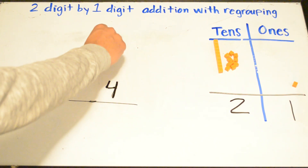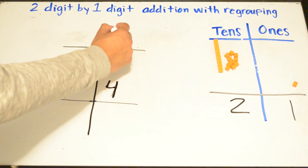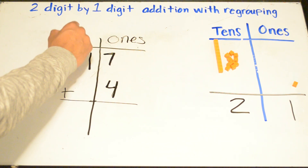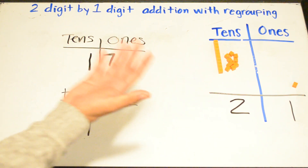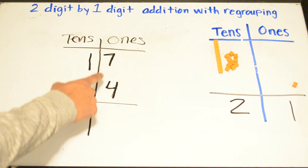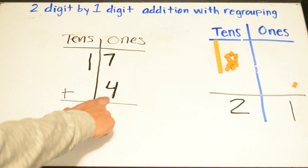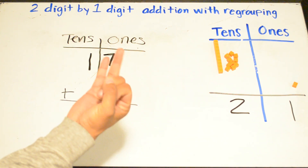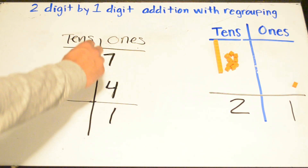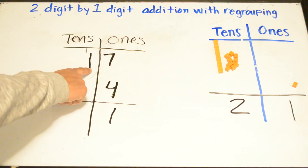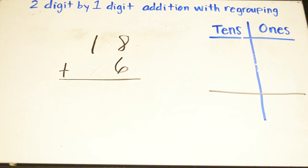The other way of solving the problem is to put a line in here so you can remember this is your ones place and this is your tens place. You can use your helping hands — you always start with the biggest number. Here you have seven and four; the biggest number is seven, so you clap your hand and say seven, then add four more: seven, eight, nine, ten, eleven. You put the one here and carry the one. Now you add one plus one, and the answer is 21.